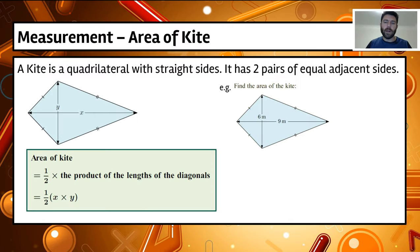It's a quadrilateral with straight sides and it has two pairs of equal adjacent sides. You can see that these sides are adjacent, they're joining and they're equal, and these two are joining and they're equal.